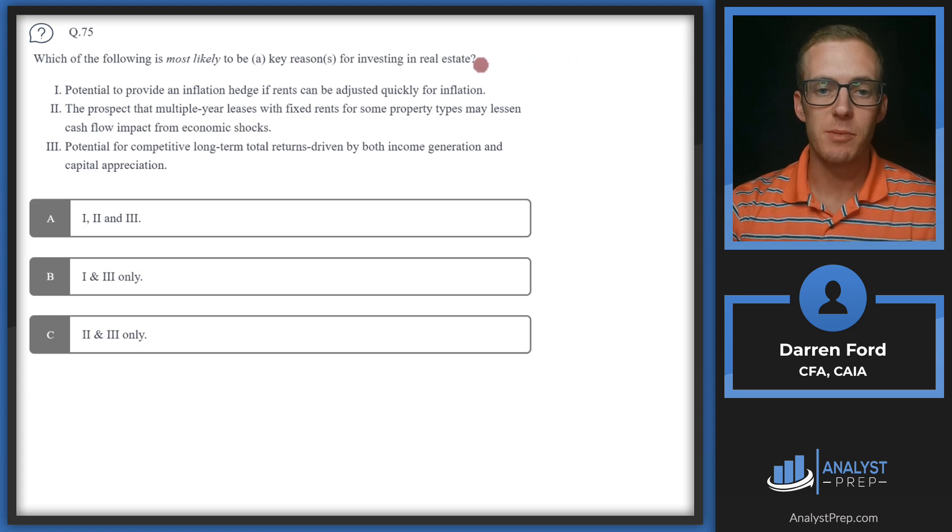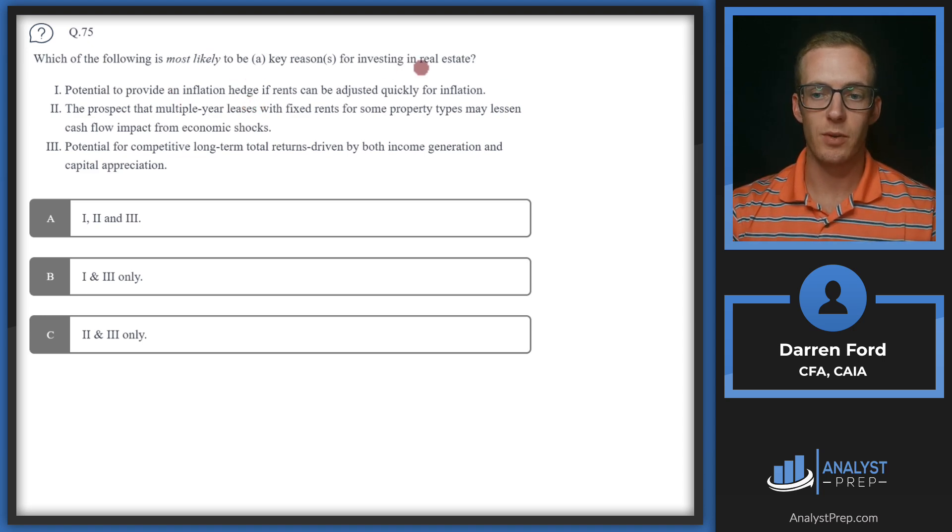Question 75: Which of the following is most likely to be a key reason or reasons for investing in real estate? We've got three statements here and our answers are dependent on which statements we think are correct. Statement one: Potential to provide an inflation hedge if rents can be adjusted quickly for inflation. This is going to be correct or a good reason to invest in real estate.